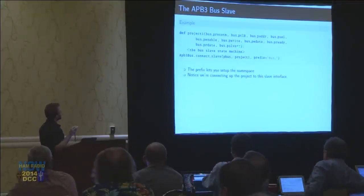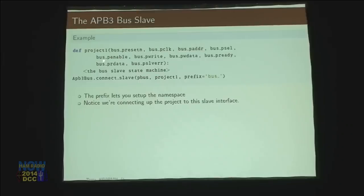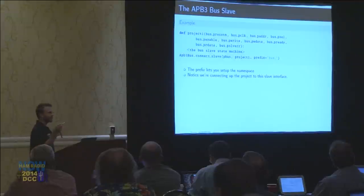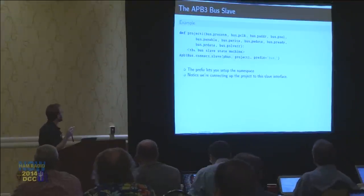The project 1 definition takes in a bunch of different things — these are all of the signals that the APB3 bus uses to do a handshake of one of these transactions. It has a reset line, a clock line, the address, some selection and enable stuff, whether or not I'm reading or writing, the data that I want to write if it's a write transaction, and then if it's a read transaction the slave can use this ready signal to say hold on I'm not ready yet. And then when it's ready, this read data is going to have the data that goes back to the master who was asking for it.